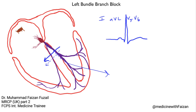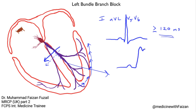In left bundle branch block, first of all, you lose that early septal activation. Not only that, but it takes so much longer for the signal to go through those intramyocardial pathways that the QRS winds up looking very wide. Generally, to make the diagnosis of complete left bundle branch block, you need a QRS of at least 120 milliseconds. So you lose that septal cue, you have a relatively slowed upstroke, and it's not uncommon to see notching of the QRS complex in the lateral leads. This is very typical of a left bundle branch block with a QRS duration of greater than or equal to 120 milliseconds.